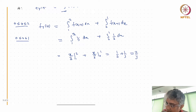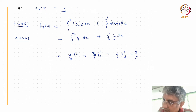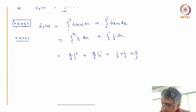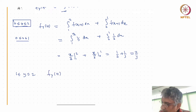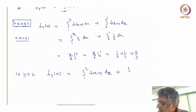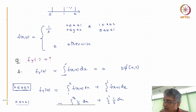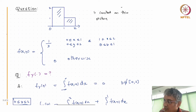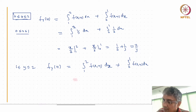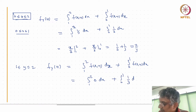So f_Y(y) = 2/3 when 0 < y < 1. Now the case when y is between 1 and 2: f_Y(y) = integral from 1 to 2 of f(x,y) dx + integral from 0 to 1 of f(x,y) dx. When y is between 1 and 2, the region where x is between 1 and 2 has density 0. So the integral from 1 to 2 gives 0, and the integral from 0 to 1 gives 1/3.